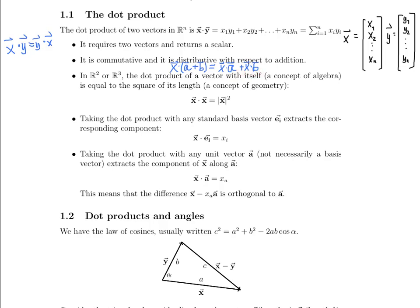It also says that in R2 or R3, the dot product of a vector with itself is equal to the square of its length, a concept of geometry. If we write the vector x like this, then the way we notate length is like this, and that length equals this. Note that this is a generalization of the Pythagorean theorem in n dimensions.